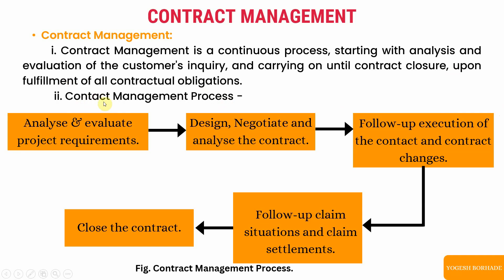The contract management process begins with analyzing and evaluating project requirements — what the user actually wants. After that, we design the project. Then we negotiate and analyze the contract, which may include project deadlines, time duration, budget, or any extra features. Following that, we execute the contract and incorporate any contract changes as we start implementing the project.